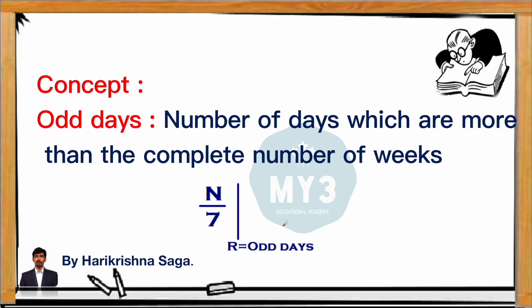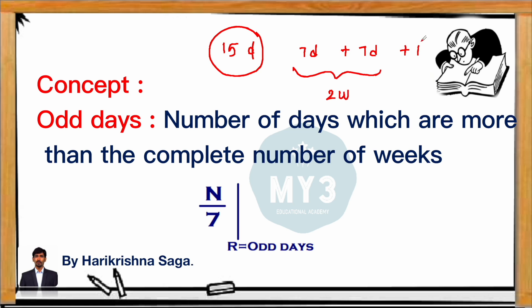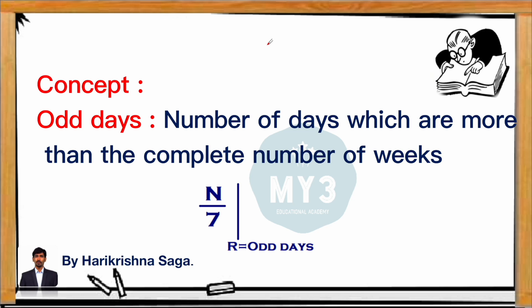Let's look at the concept. Basically, all the questions on calendars will revolve around the concept of odd days. Odd days are nothing but the number of days which are more than the number of completed weeks. For example, if you have 15 days, odd days means we first check the number of completed weeks. One week has 7 days, so 7 plus 7 plus 1 day — after completing 2 weeks, we have 1 extra day. This 1 day is called an odd day. To calculate mathematically, take the number of days and divide by 7, then observe the remainder. This remainder indicates the number of odd days.